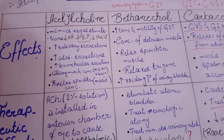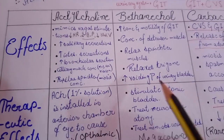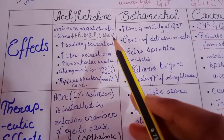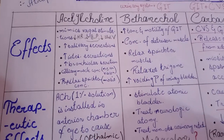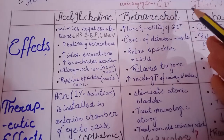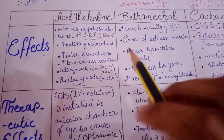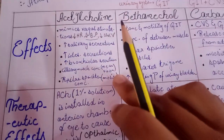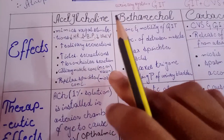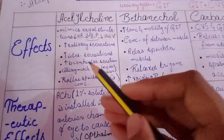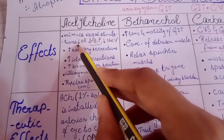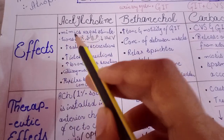Our first drug is acetylcholine, and it mimics the vagal stimulation. We have parasympathetic effects produced by acetylcholine. First of all, this includes a decrease in heart rate. How does acetylcholine decrease heart rate?